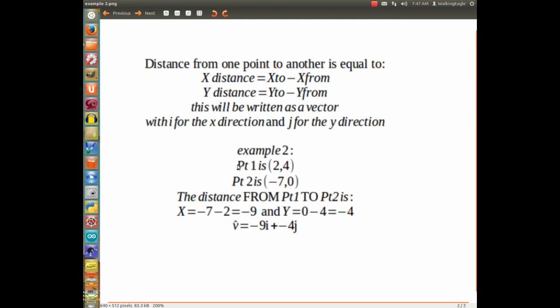point 1 is 2 comma 4, point 2 is minus 7 to 0. So the distance from point 1 to point 2 is minus 7 minus a positive 2, which makes it a total of 9, minus 9.